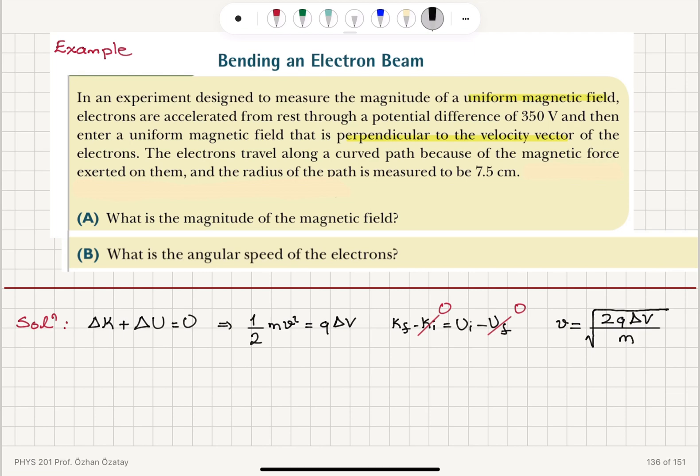Now, the speed that we can calculate from this is basically 2 times the electron charge 1.6 times 10 to minus 19 coulombs times 350 volts divided by mass of the electrons 9.11 times 10 to minus 31 kilograms, the rest mass of the electrons, in square root. This gives us a speed of 1.11 times 10 to 7 meters per second.